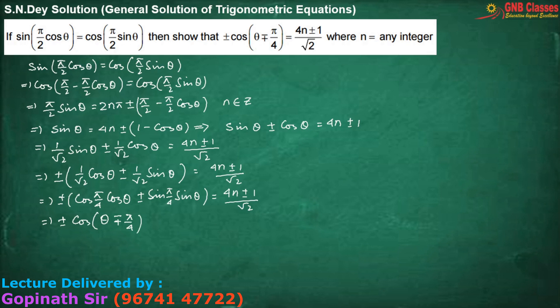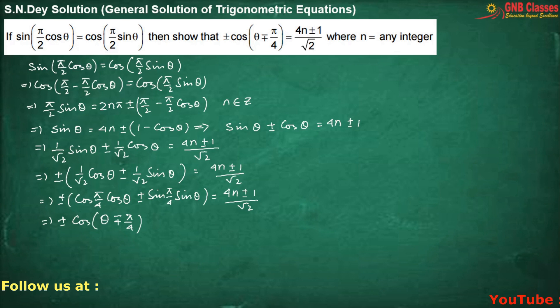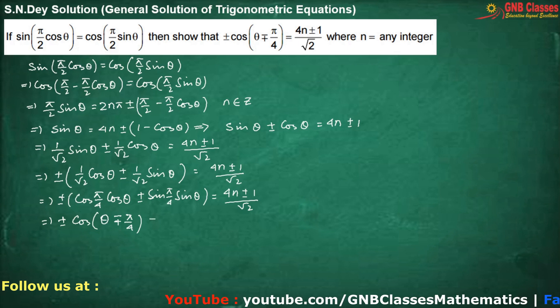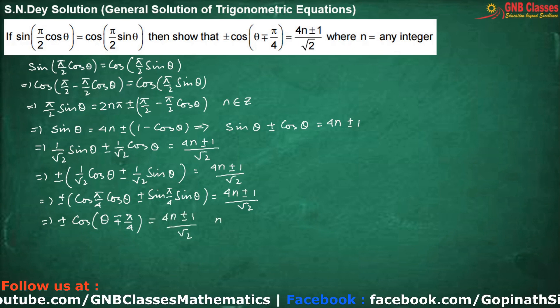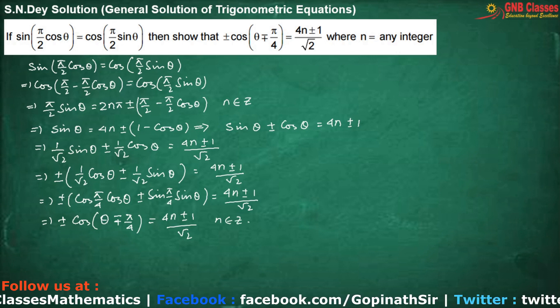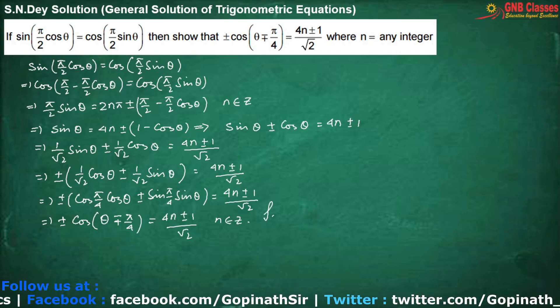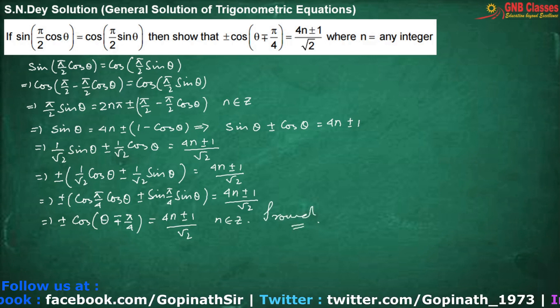Since cos(a)cos(b) + sin(a)sin(b) gives cos(a - b), and cos(a)cos(b) - sin(a)sin(b) gives cos(a + b), that is why I have reversed the sign and written ± as ∓. This equals the result where n belongs to any integer. Proved. Let us move to the next problem.